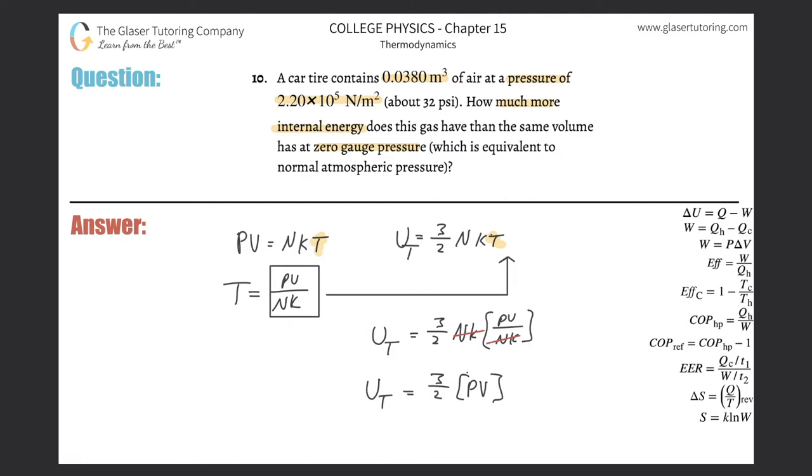And this will always be true for a monatomic gas. So now we have to consider that they're talking about how much more internal energy. So we're really saying what's the change in internal energy here if the pressure changes? Because they're saying here's the pressure at some point in time, and then we're talking about zero gauge pressure. So they're talking about delta P times V. And they said that the volume is constant, so this is really the formula we need to use.